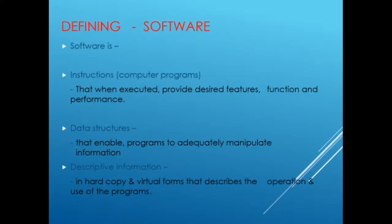Defining software: software consists of instructions, data structures, and descriptive information. Instructions are computer programs that, when executed, provide desired features, functions, and performance. Data structures enable programs to adequately manipulate information, and descriptive information — in hard copy or virtual form — describes the operation and use of the programs.